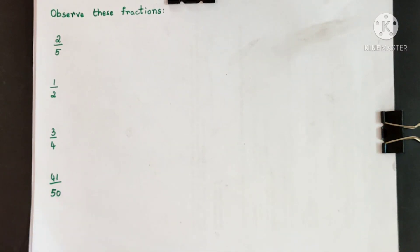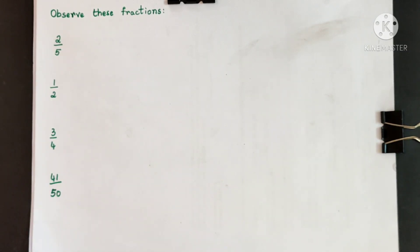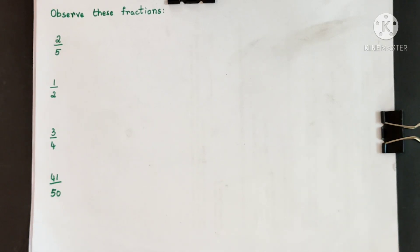Now observe these fractions. You can see that none of these fractions have the denominator as 10 or 100. The denominators are not equal to 10 or 100. Now how do we write them in decimal fractions? As we saw just now, we need to convert these fractions to have denominators of 10 or 100.